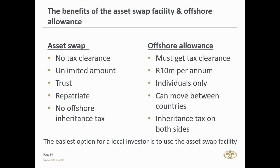For the offshore allowance, you must obtain tax clearance before taking money offshore. You have only 10 million Rand per annum per person, plus a 1 million Rand travel allowance per year — these are only for individuals over 18. Once the money is offshore, there is no need to repatriate back to South Africa; you can sell and move to other countries offshore. However, in the event of death, inheritance tax applies on both sides — offshore and locally — so you will be taxed on that money.